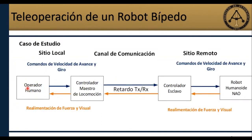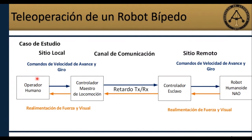El operador humano va a generar comandos de control de velocidad de avance y giro, que se van a enviar a un controlador maestro de locomoción. Llegará al sitio remoto donde se utilizará en un controlador esclavo, y el robot humanoide va a ejecutar esas acciones de control. En el sitio remoto se va a enviar la realimentación de fuerza y visual al operador humano. La realimentación de fuerza está en función del error de coordinación, entre los comandos que envía el operador y las velocidades reales del humanoide, y visual a través de cámaras.